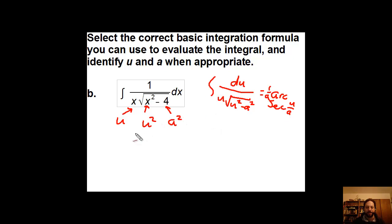We've already identified that u is x, a is 2, and so it's just a matter of saying this is one half arc secant of x over 2 plus c. Didn't require a whole lot of work. It was just a basic formula.